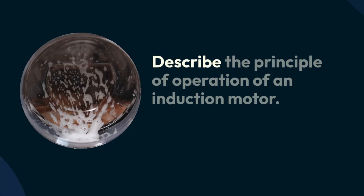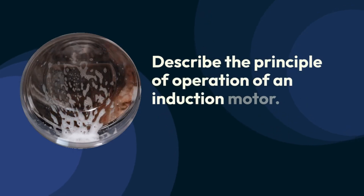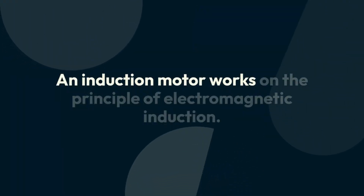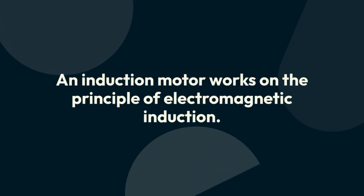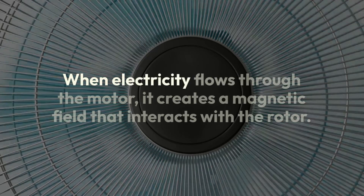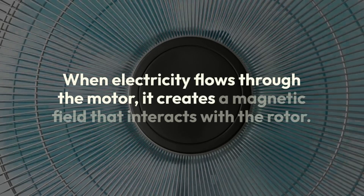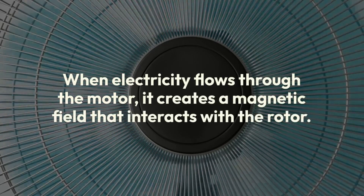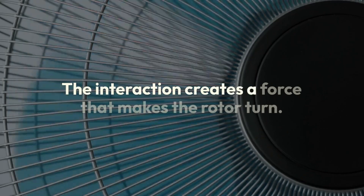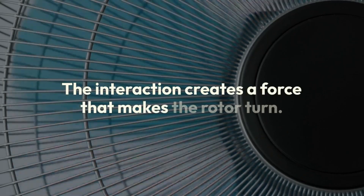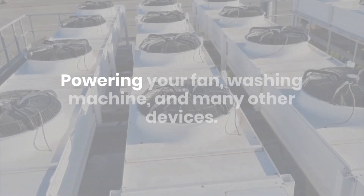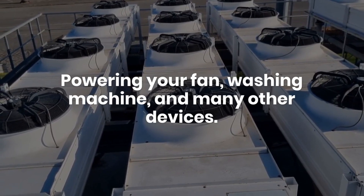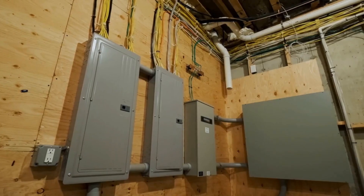Describe the principle of operation of an induction motor. An induction motor works on the principle of electromagnetic induction. When electricity flows through the motor, it creates a magnetic field that interacts with the rotor. This interaction creates a force that makes the rotor turn, powering your fan, washing machine, and many other devices.